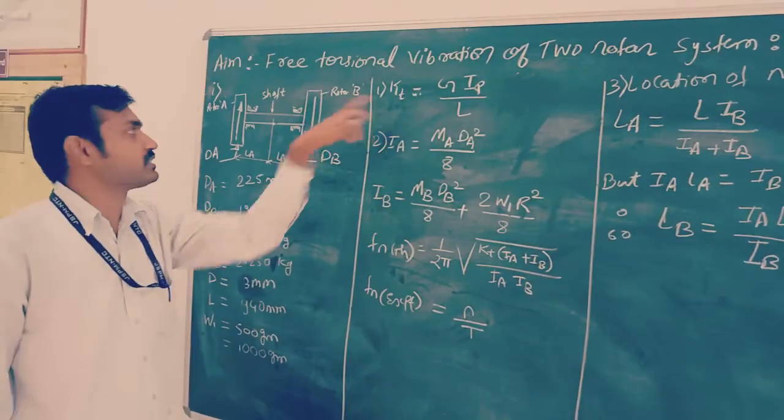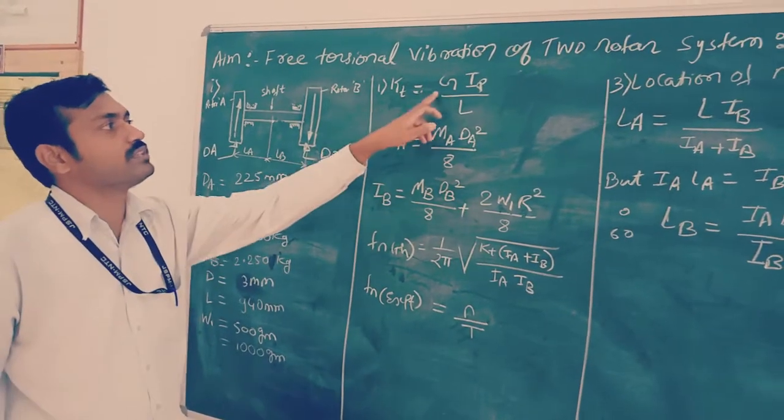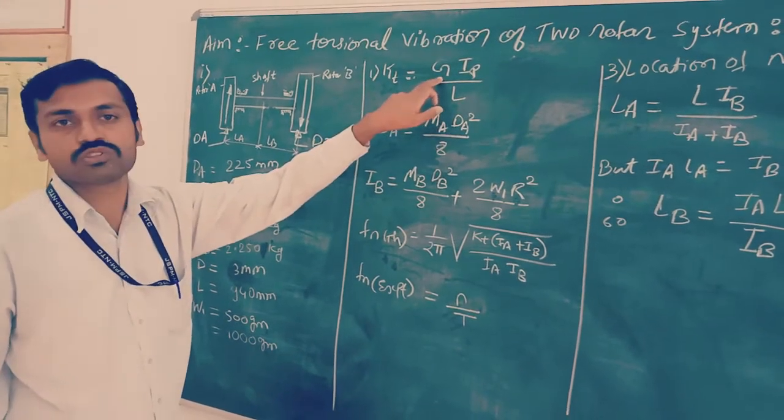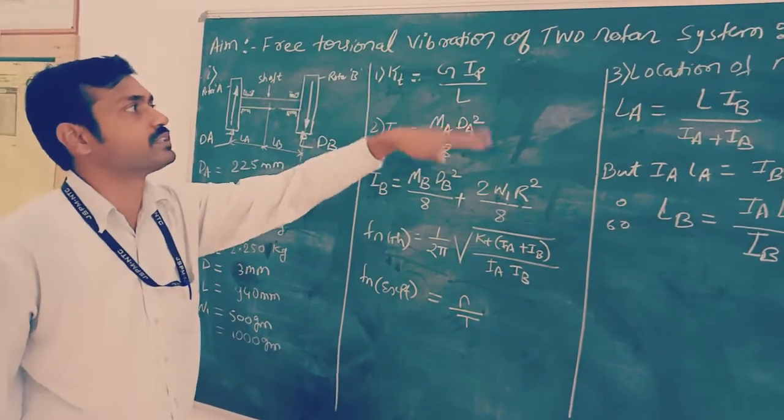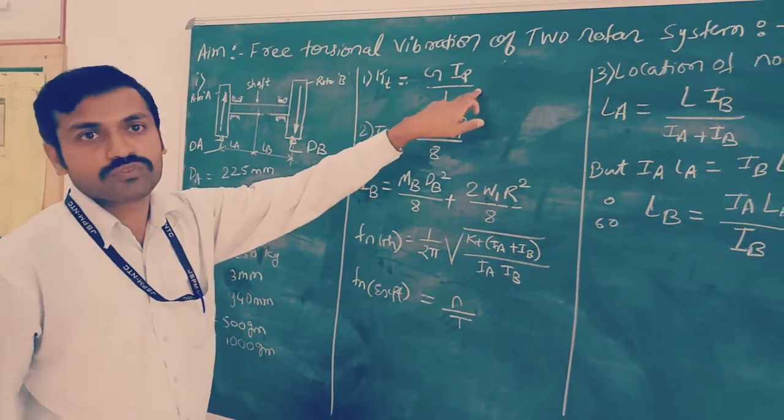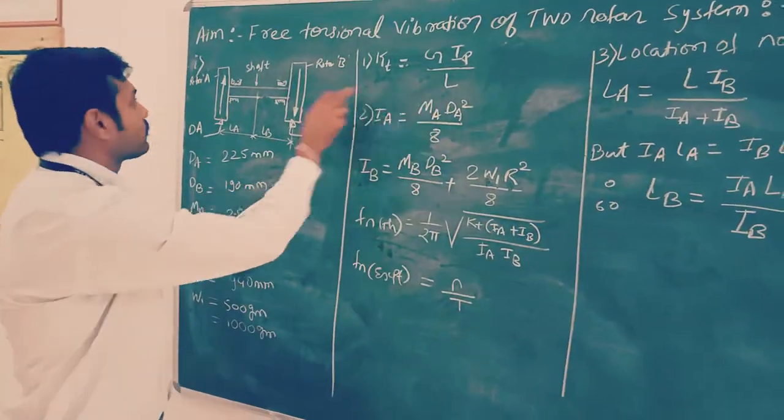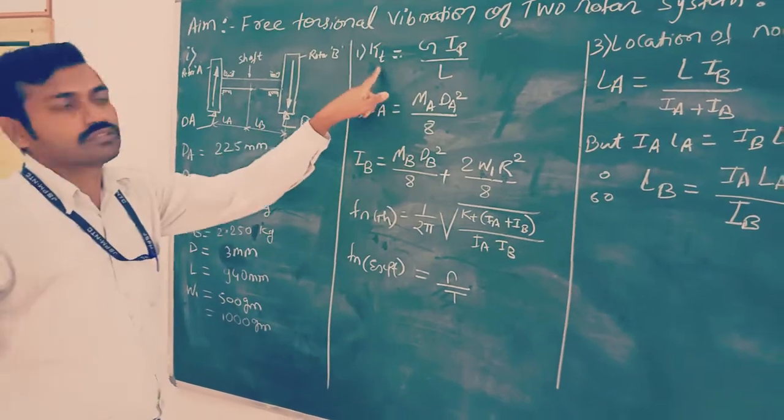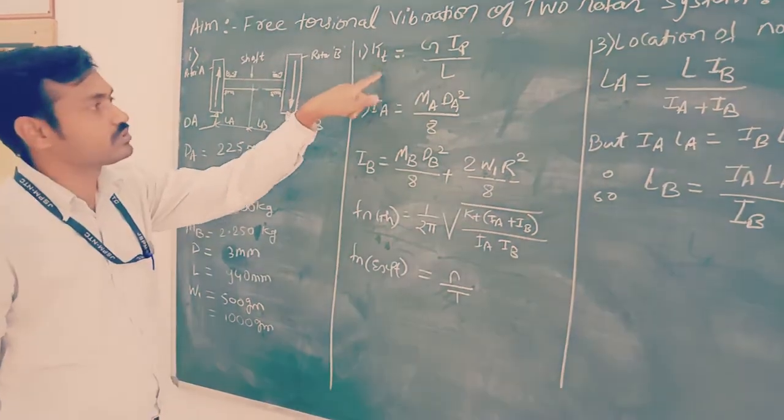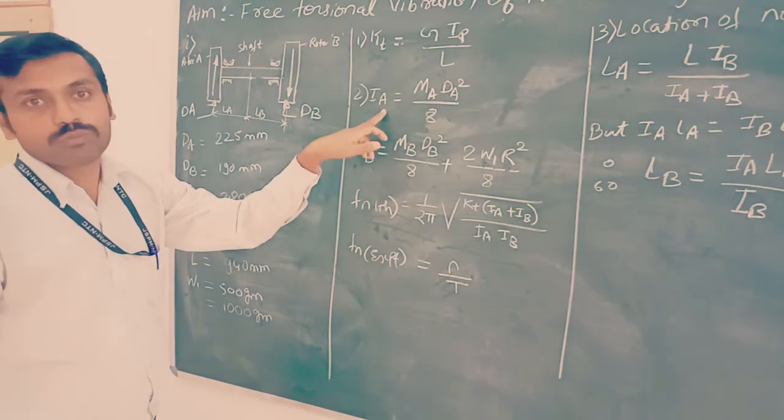KT is the torsional stiffness of this shaft. It's formula is G times Ip upon L. G is modulus of rigidity, Ip is polar moment of inertia of the shaft in meter to the fourth, and L is the length of the shaft. From this we will come to know KT torsional stiffness of shaft.